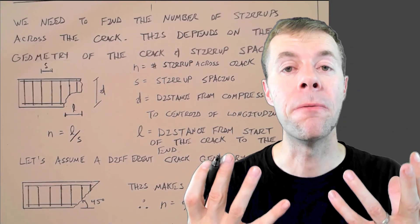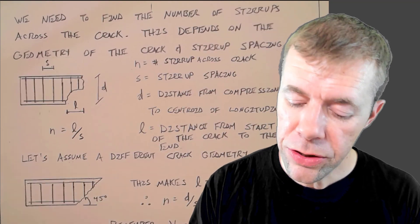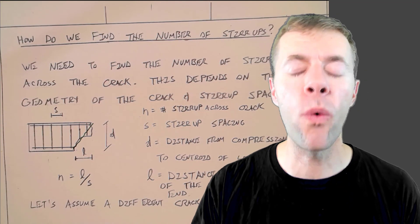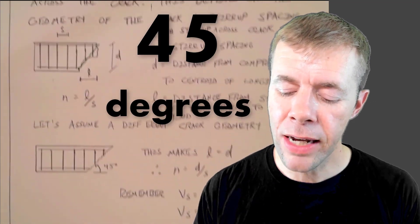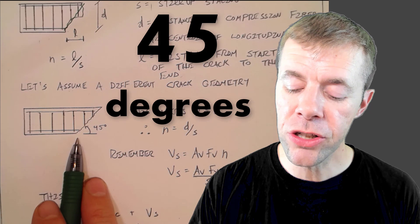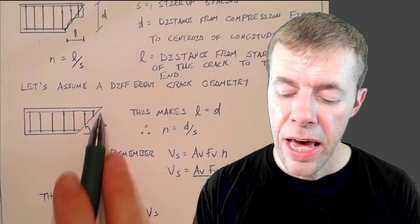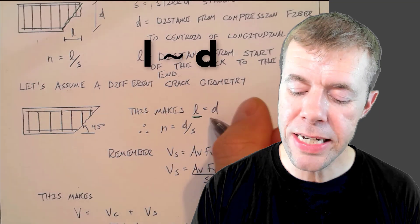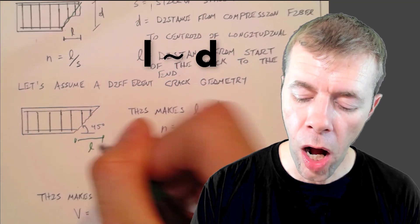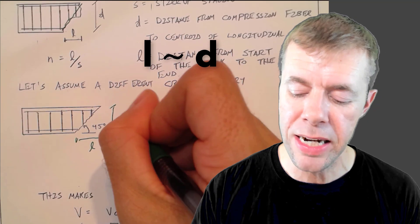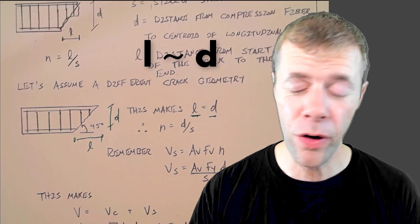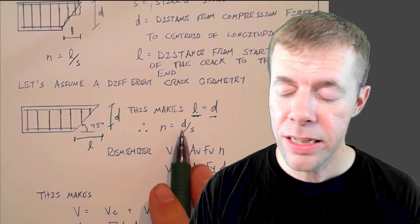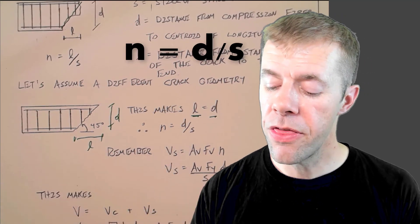Well, I'm going to make an assumption. If I notice, I could draw a line from here to here, and it's probably about 45 degrees. That's said in another way. The crack, I can envision it happening like this. If I do that, that would make my L equal to my D. That would make my L approximately equal to my D. They'd be at least very, very, very close. That would make my number of bars be my D divided by my S.